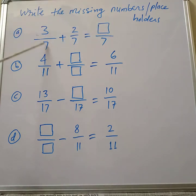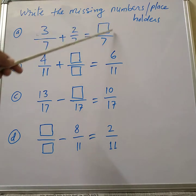First example, see here, 3 by 7 plus 2 by 7 equal to how much will come here?